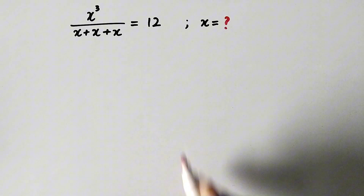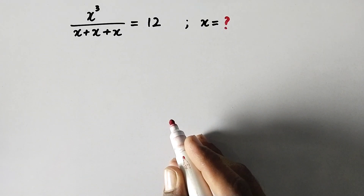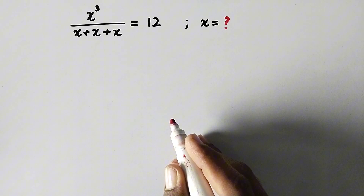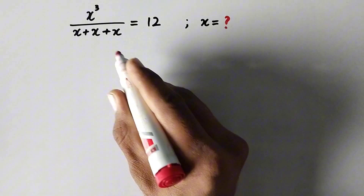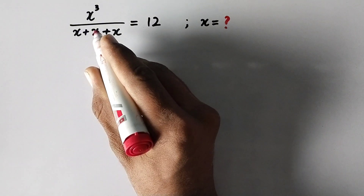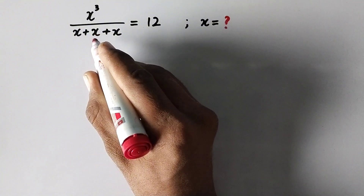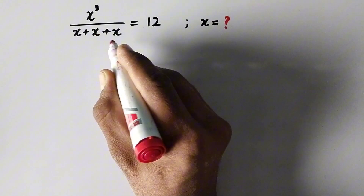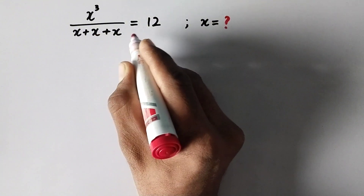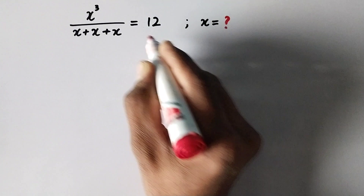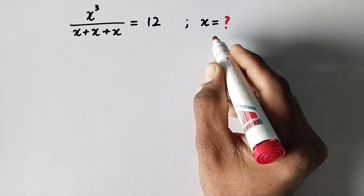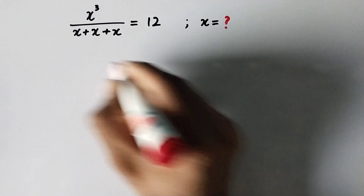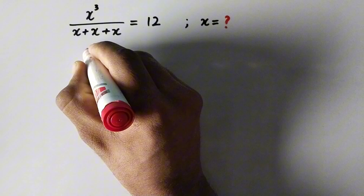Hello everyone and welcome to Explore Maths. Today we have to solve a very nice Olympiad math question: x cubed over x plus x plus x is equal to 12, and we have to find the value of x. So let us see the solution.